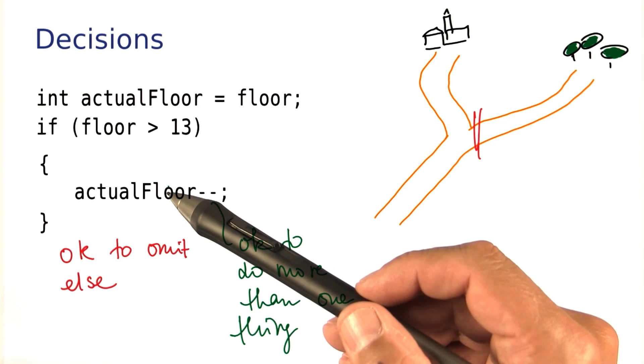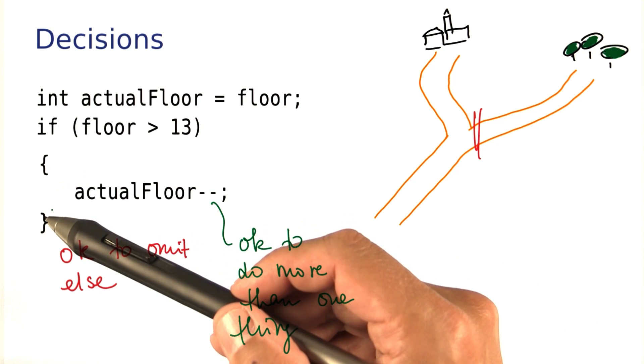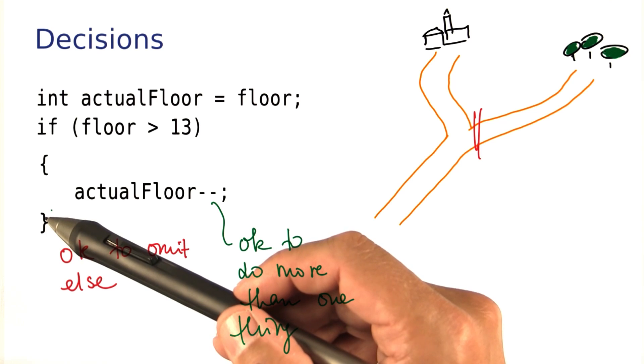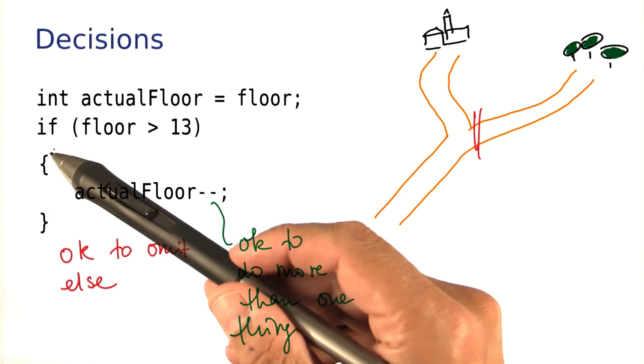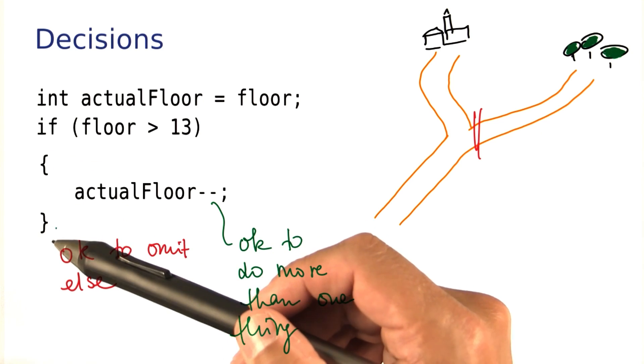Conversely, if there is only one action here, it's legal to omit the braces, but we won't ever do that. It's just clearer to always put them there — it makes the code easier to read.